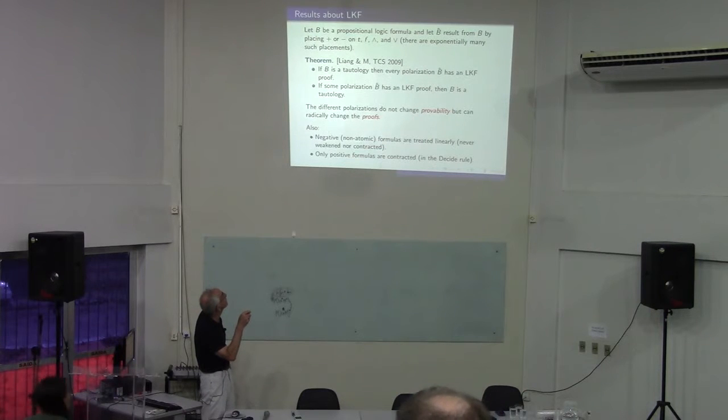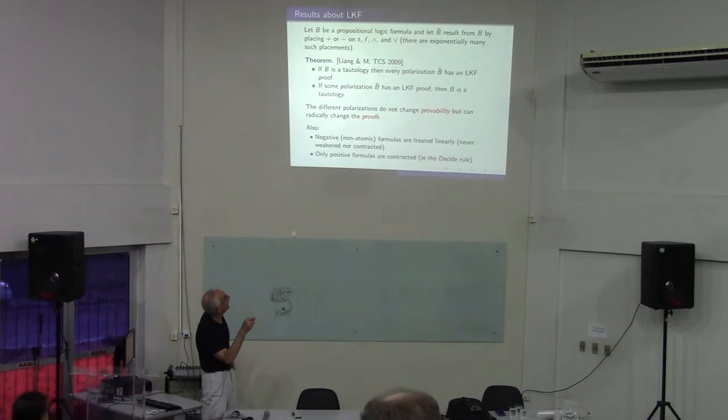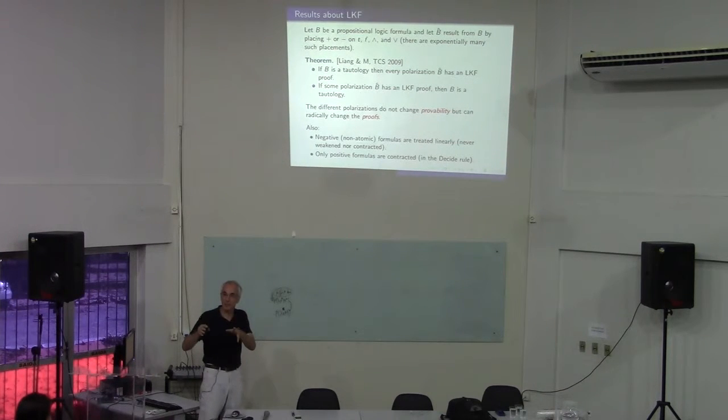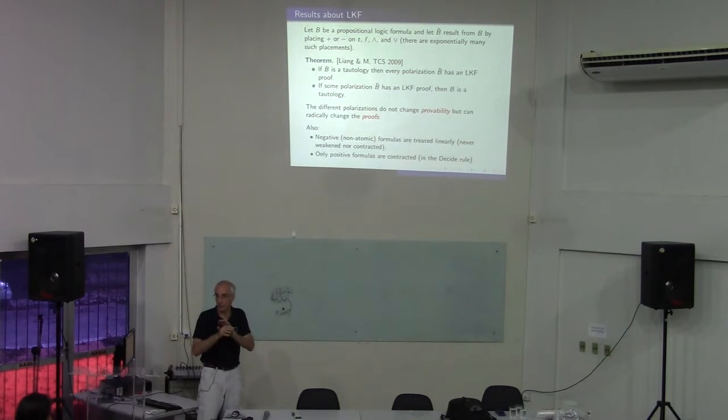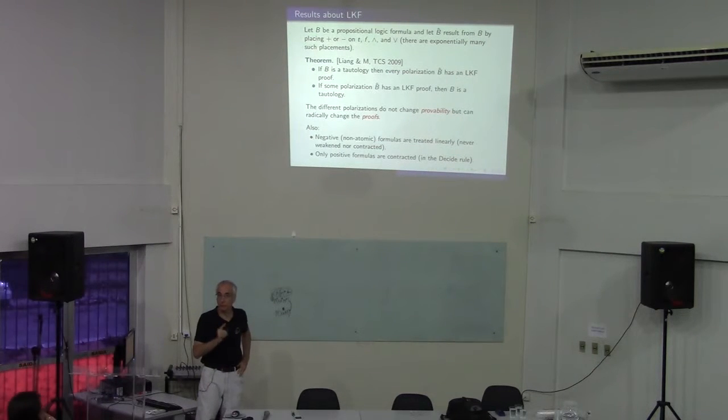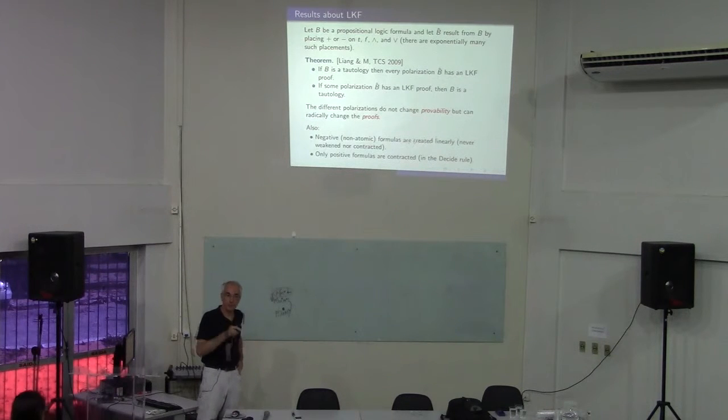If I take a propositional formula in classical logic and I let B hat be the result of adding pluses and minuses to the propositional connectives, if I have n occurrences of propositional connectives, I have 2^n possible hats I could choose - a lot of polarization possibilities. The theorem is: if you start with a tautology, then every polarization has an LKF proof. This polarization has nothing to do with provability but everything to do with proof. Some of those proofs can be huge, some can be small, depending on the polarity you choose.